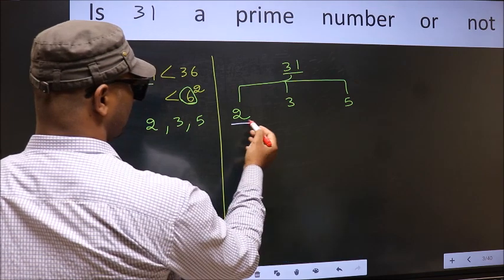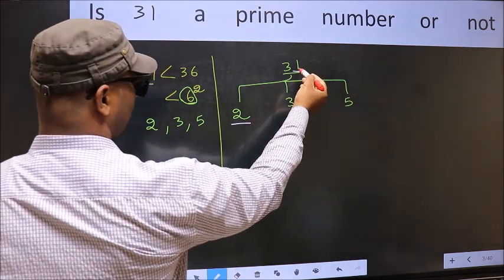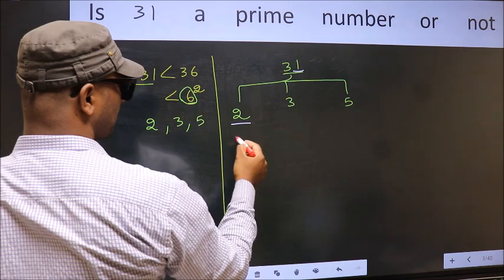First with 2. Last digit is 1, so this is not divisible by 2.